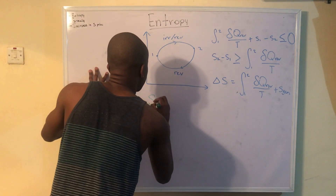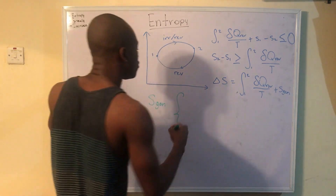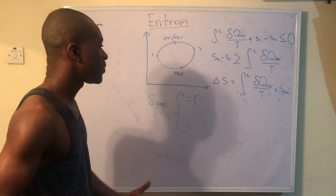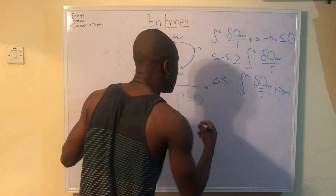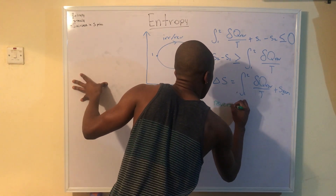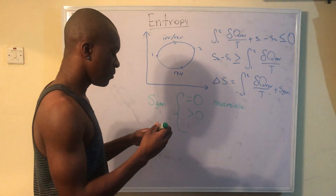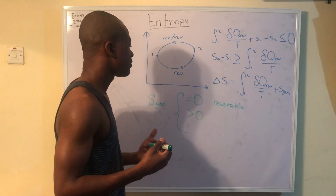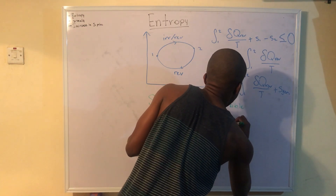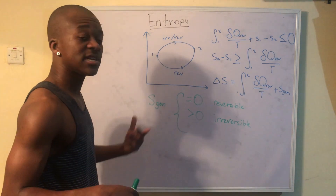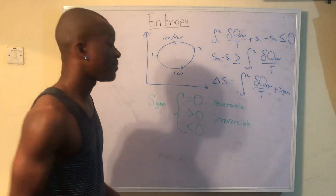Regarding S_gen terminology: if S_gen equals zero, we're dealing with a reversible process — only the Q_reversible/T term remains. If S_gen is greater than zero, we're dealing with an irreversible process. And if S_gen is less than zero, that's an impossible statement — it cannot happen.